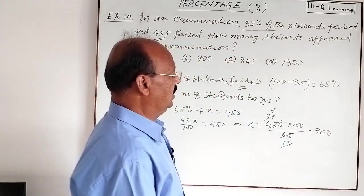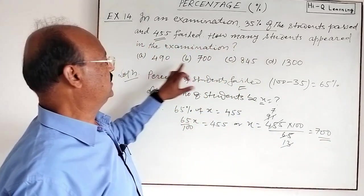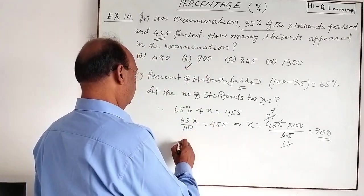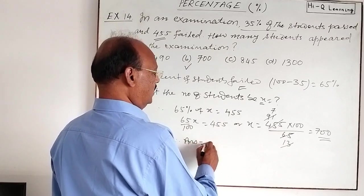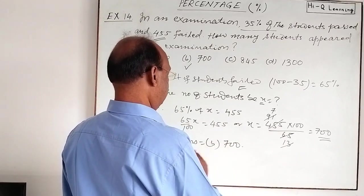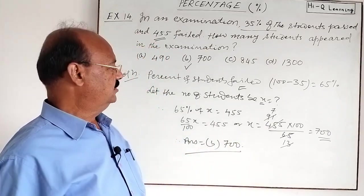So the total number of students is 700. Option B is correct. Therefore the answer is B, equal to 700. This is a very simple question.